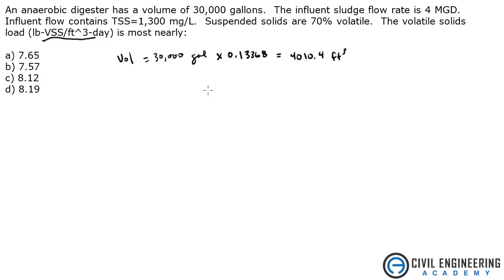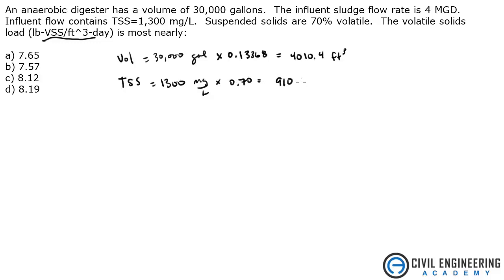We were told that suspended solids are 70% volatile. So if we take the total suspended solids, which was 1300 milligrams per liter, and multiply that by 70%, that gives us 910 milligrams per liter. 70% of the suspended solids are volatile, so this should be our VSS.